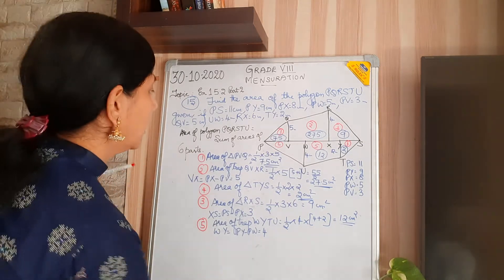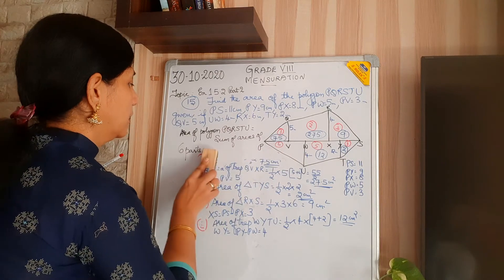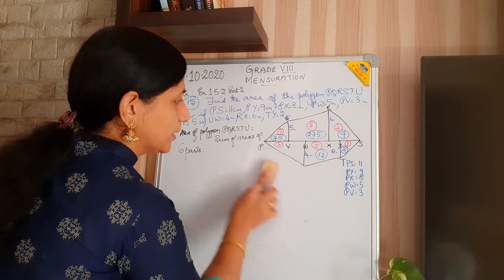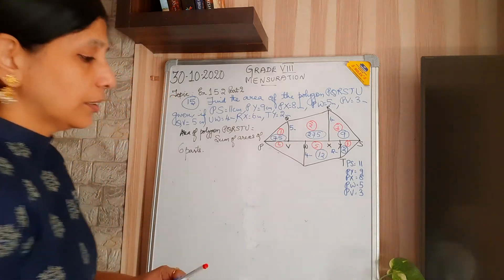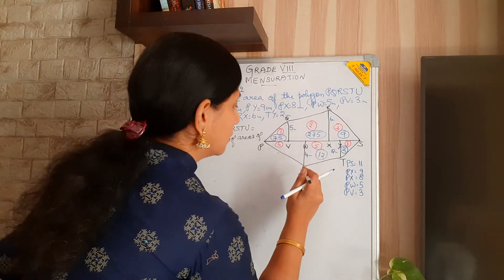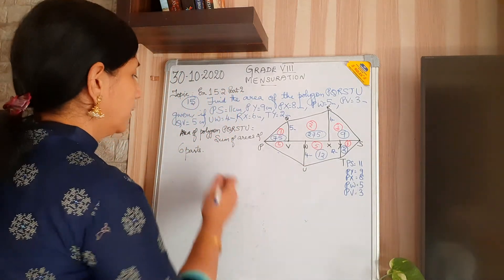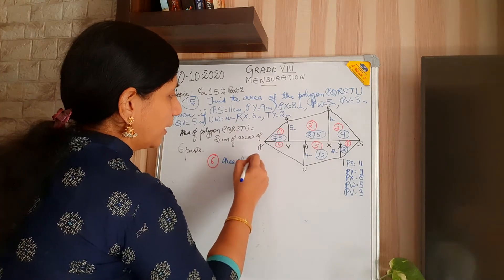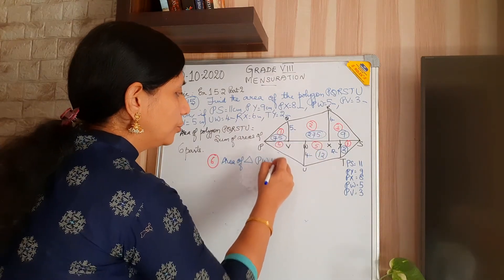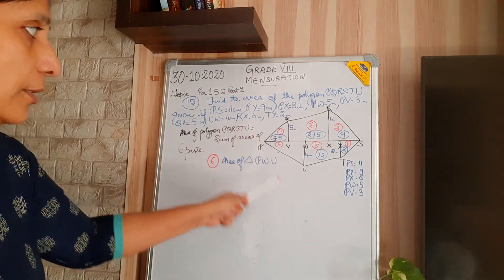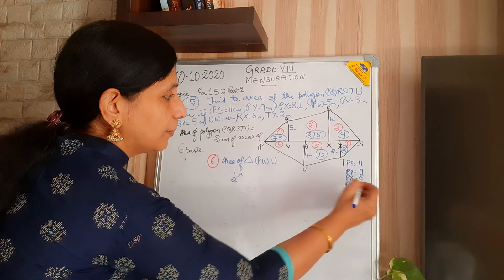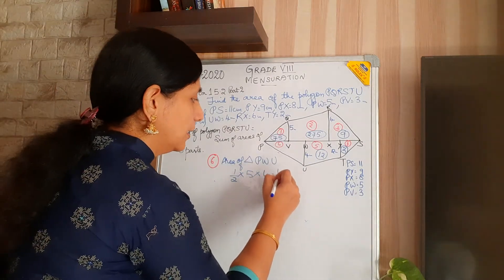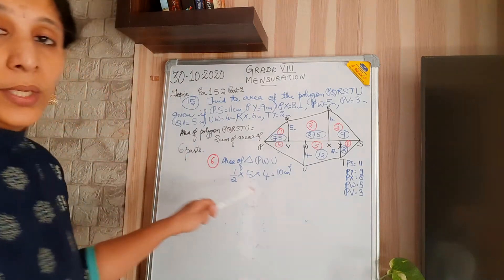The last, sixth part is a triangle. Area of triangle PWU equals half × base × height. Base PW is 5, and height is 4. So half × 5 × 4 = 10 centimetres square.